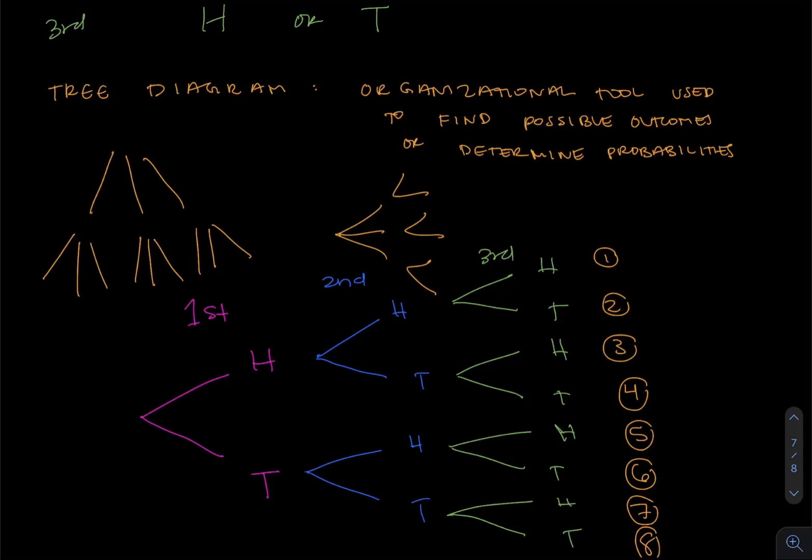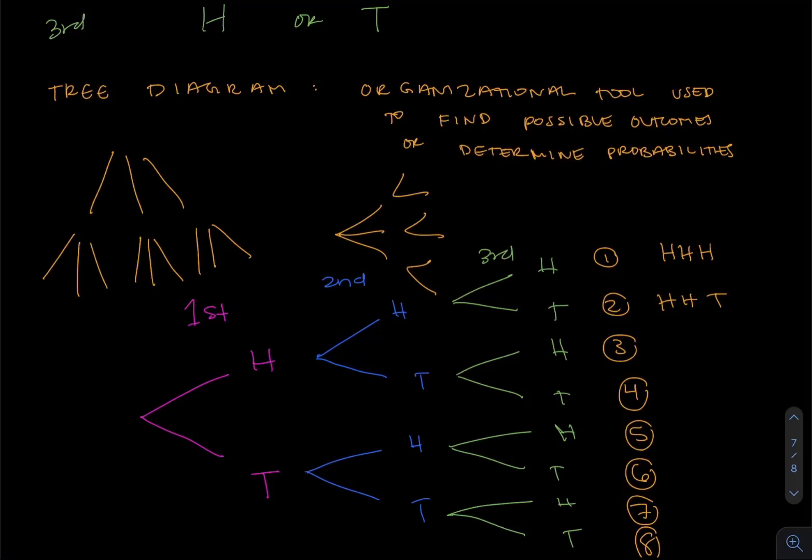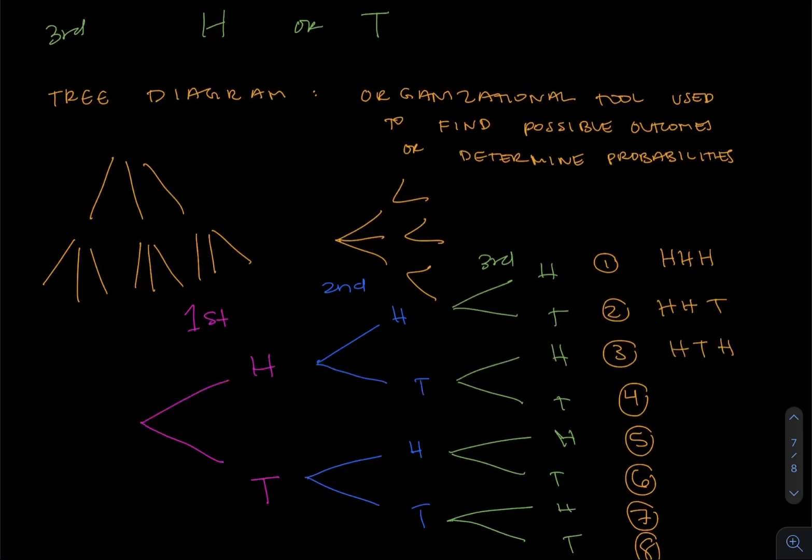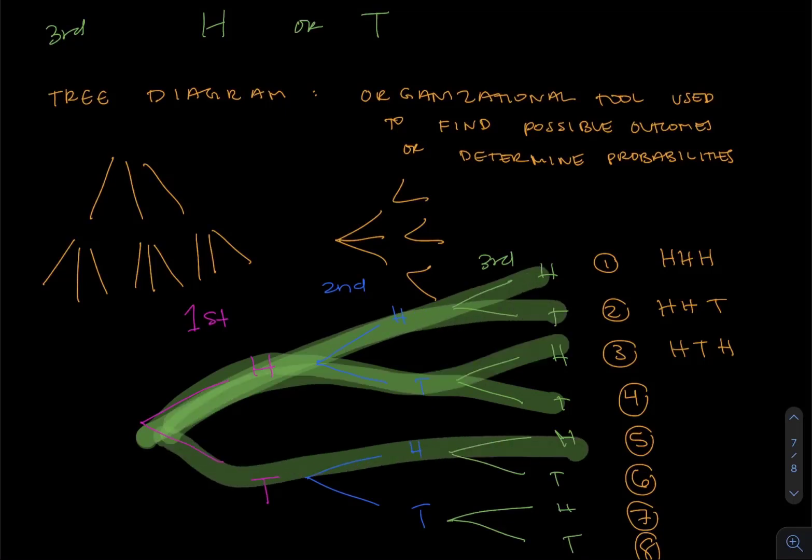The first branch, we get heads, heads, heads. We could get heads, heads, tails, heads, tails, heads, and so on. I'm just going to fill out the rest here, but notice you're just marching down the different branches or across the different branches here and writing down all of the different combinations that you can get.